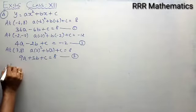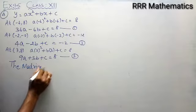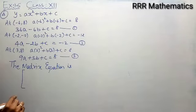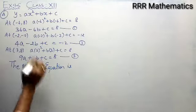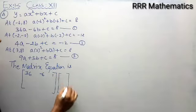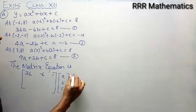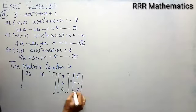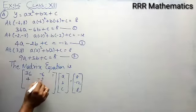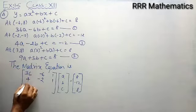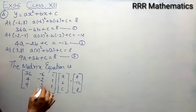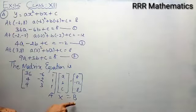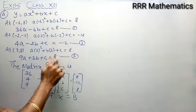The very first step: write the matrix equation. The matrix equation is AX = B. Write all the coefficients of a, b, c in order. From equation 1: 36, −6, 1. From equation 2: 4, −2, 1. From equation 3: 9, 3, 1. Variables are [a, b, c] and constants are 8, −12, 8.